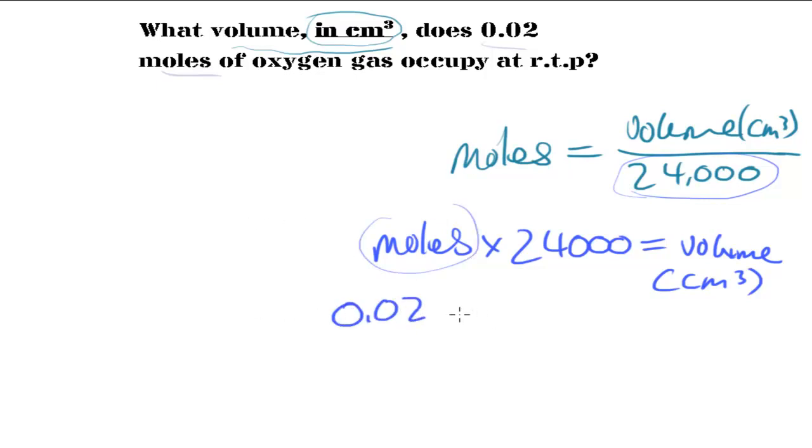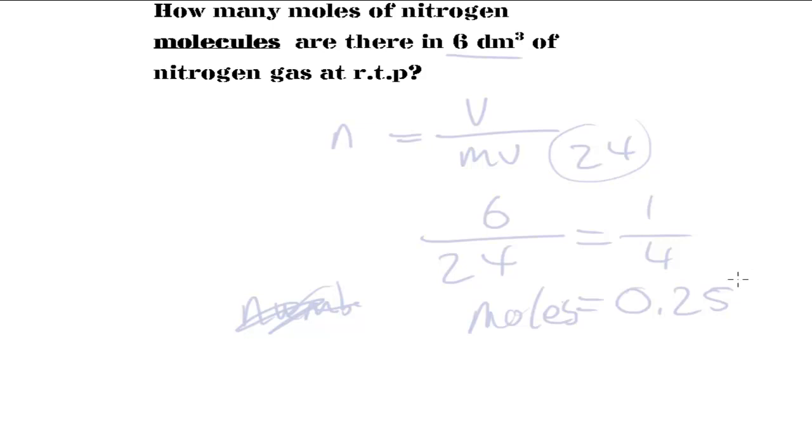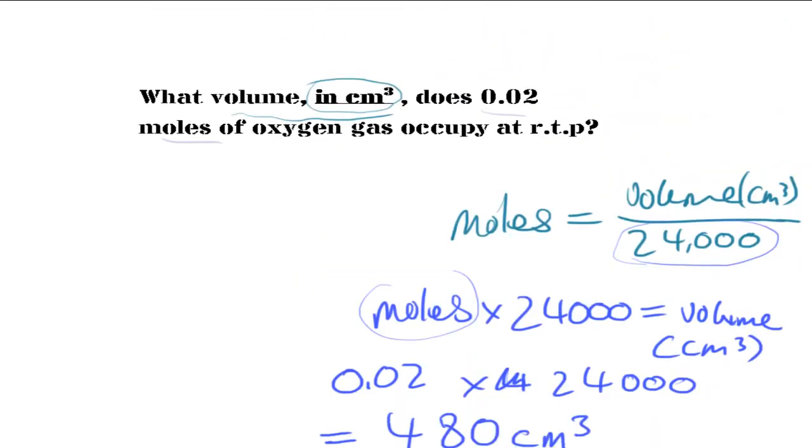So, 0.02 times 24,000 equals 480. So, there we go. That's how we'd use that equation to find out the moles from the volume, or the volume from the moles. And this particular one, 480, that would be in centimetres cubed. That, the units we have on, that's how we'd work it out.